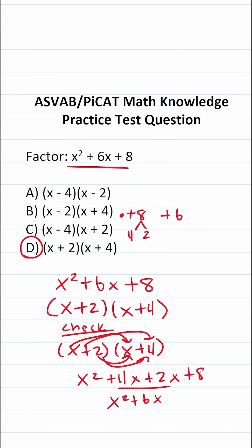This becomes x² + 6x + 8. As you can see, this does match what we were asked to factor. So we're confident that D is the correct answer.